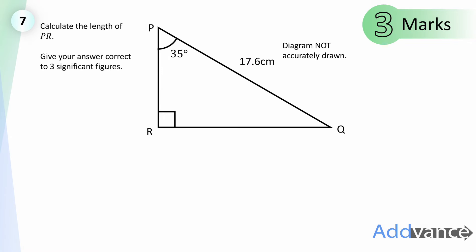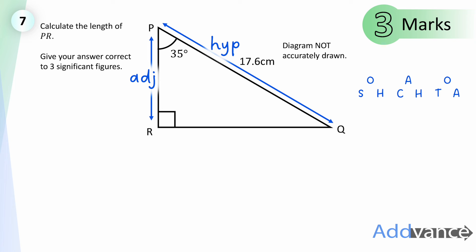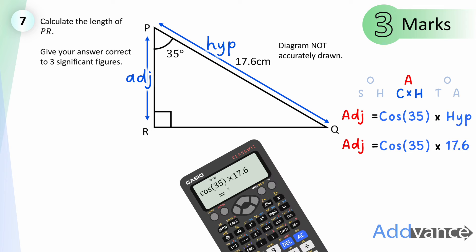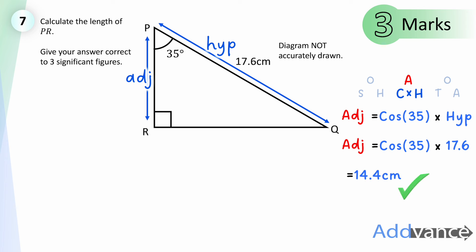Question seven: calculate the length of PR to 3 significant figures. We have a right-angled triangle and we'll use SOHCAHTOA. PR is the adjacent side; the hypotenuse is 17.6. Cosine connects adjacent and hypotenuse, so adjacent equals cos(35°) × 17.6. On the calculator: cos(35°) × 17.6 = 14.417, which rounds to 14.4 centimetres to 3 significant figures. That's 3 marks.